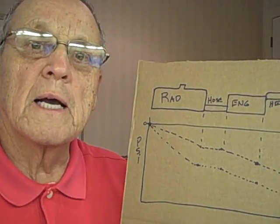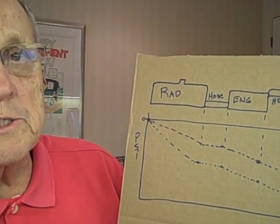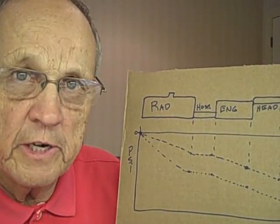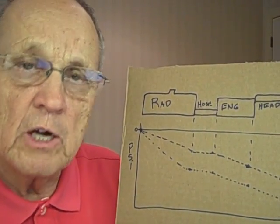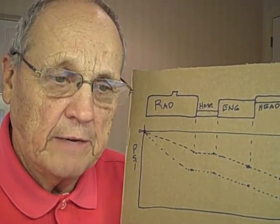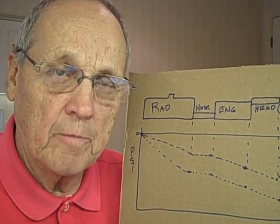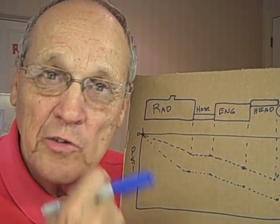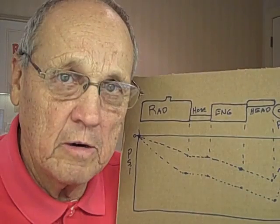I'm going to discuss the Model A radiator cooling system. Most Model A's overheat, and my criteria to tell whether one overheats or not is if it can go 45 miles an hour for 10 minutes straight without any let up. If your car can do that, you have a pretty good radiator.